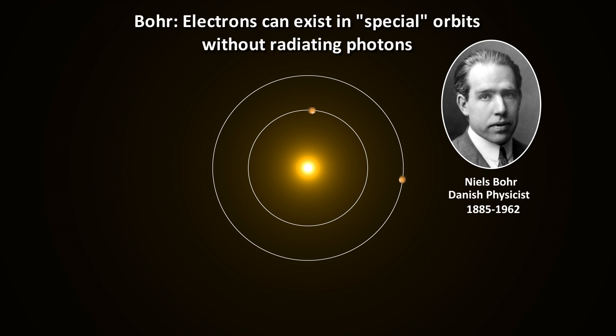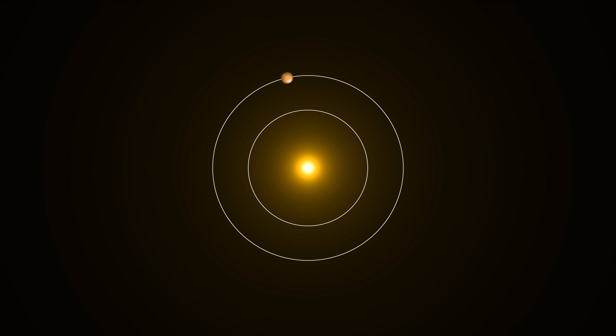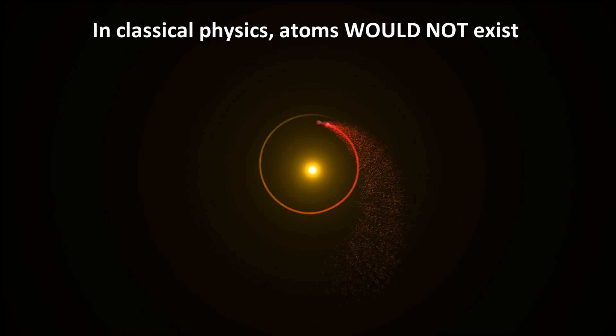Niels Bohr came up with part of the answer. Only special orbits are allowed around the nucleus, where the angular momentum of the electron is a whole number multiple of Planck's constant over 2 pi. So electrons are in fixed orbits according to their energy states. Light is only emitted or absorbed when electrons jump from one orbit to another. This is significant because it means that atoms as we understand them cannot form in classical physics. The orbits of electrons have to be quantized or they will not exist.